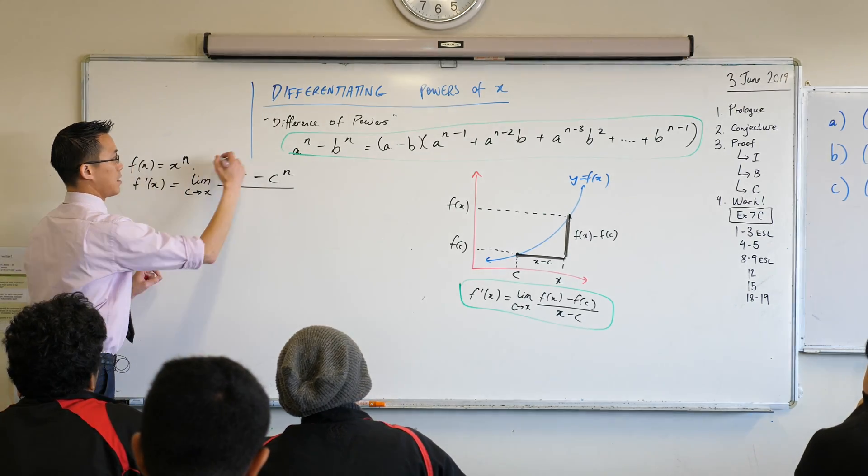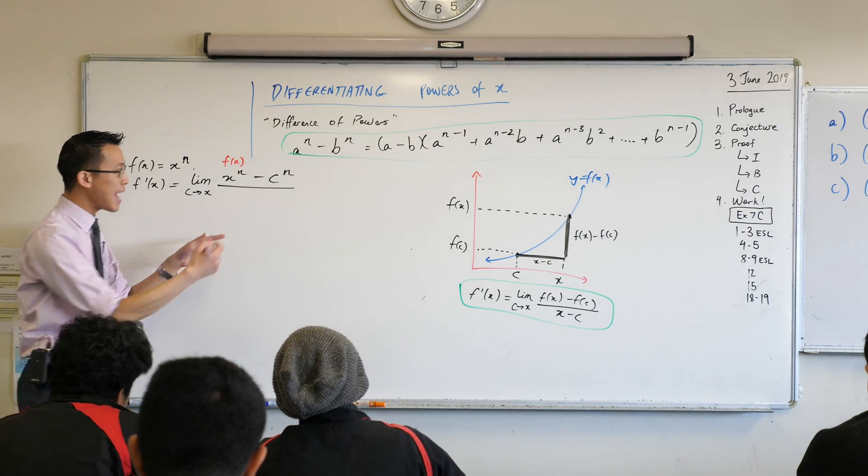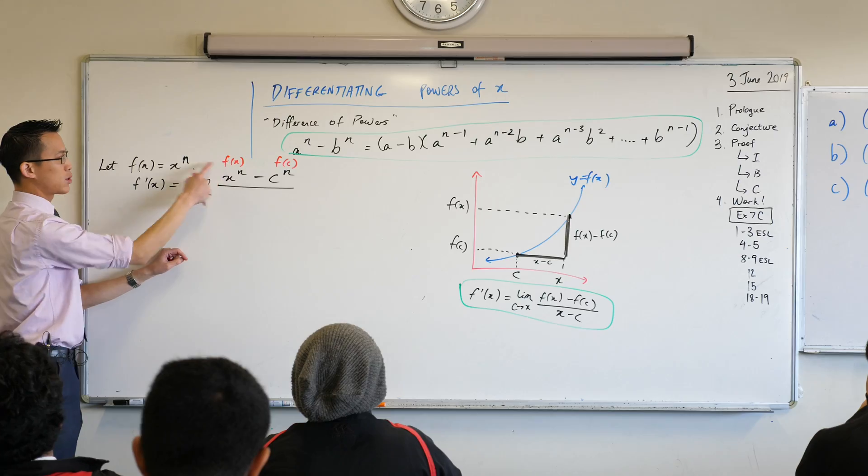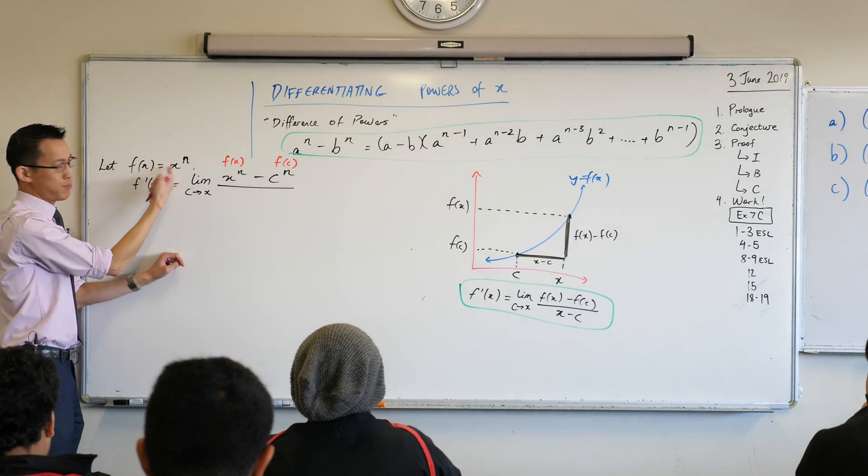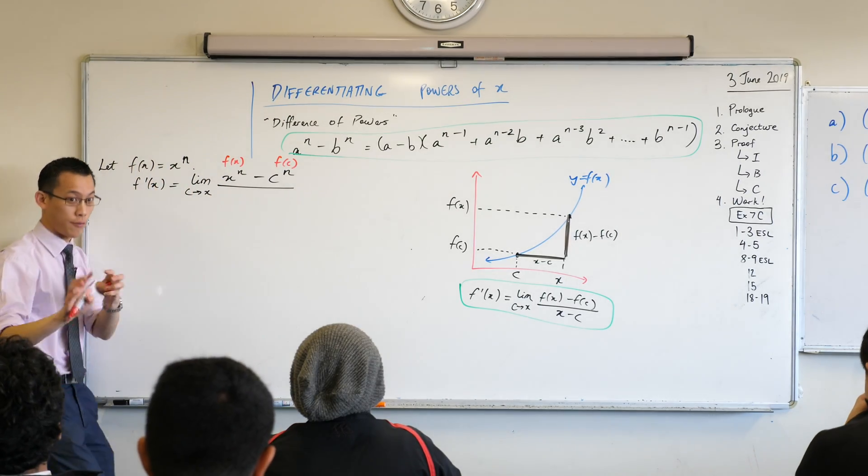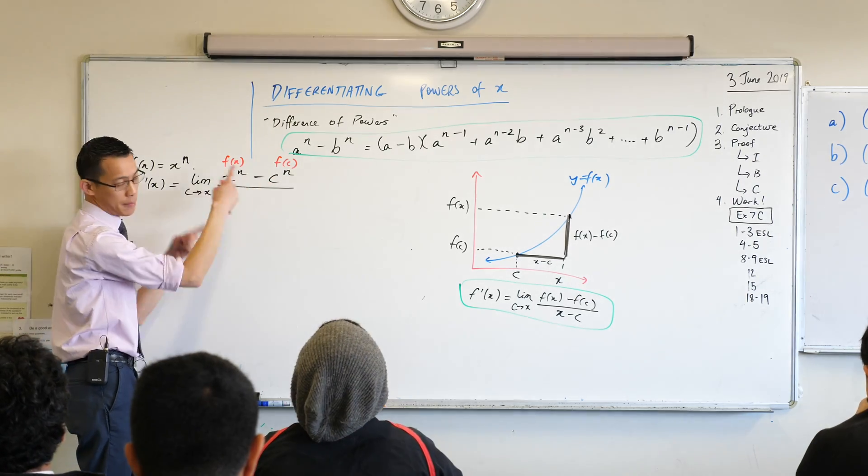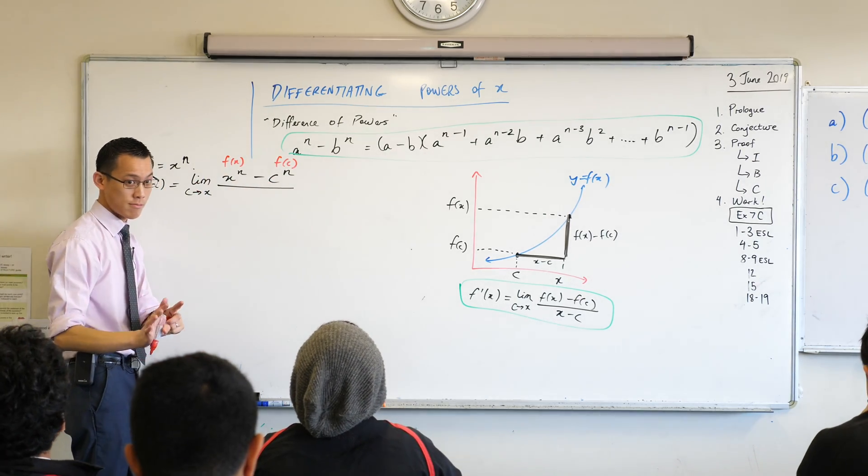Let me just write that down. So here's f(x), right? To say f(c), by definition, it means everywhere you saw an x in here, don't put an x, put in c instead. That's your function notation back from the start of the year. Okay, so that used to be an x, but I swapped it out for a c.